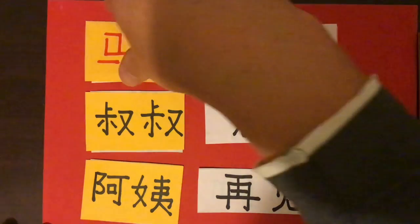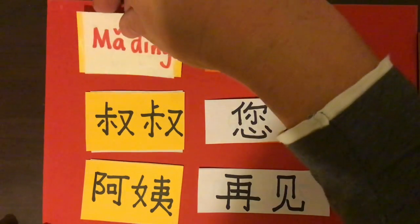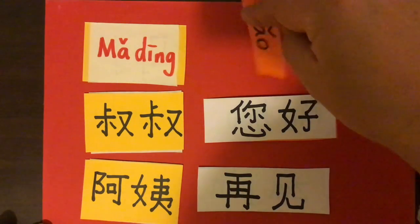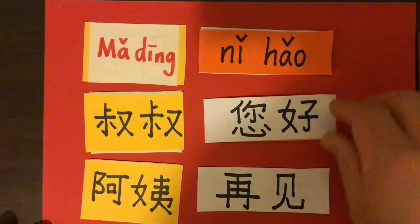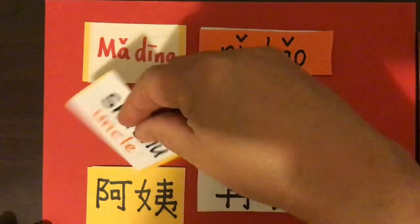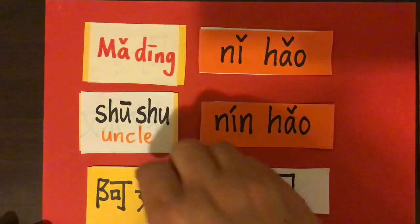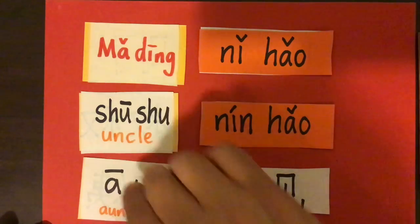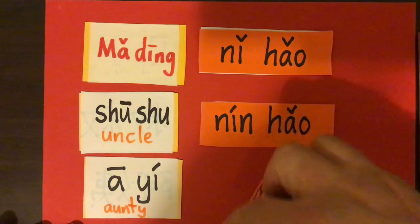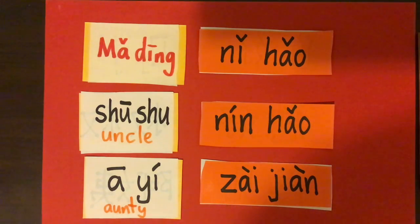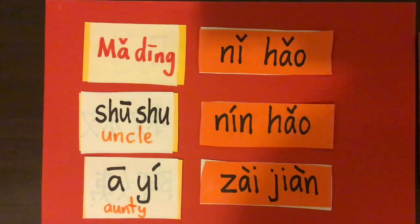Let me turn these over so you can see them in pinyin. Mǎ Dīng, nǐ hǎo — say hello Martin. Shūshu, nín hǎo. Āyí, zàijiàn. As I'm saying these, everyone, it's great for you to have a go at saying them yourselves, because this is all part of learning a language — we hear it and we speak it.